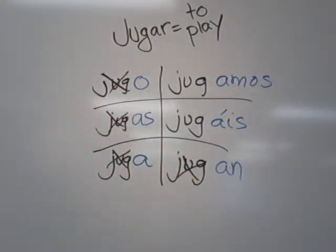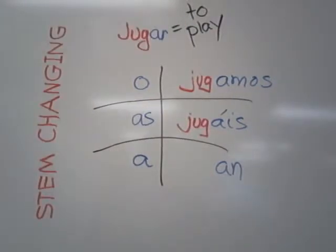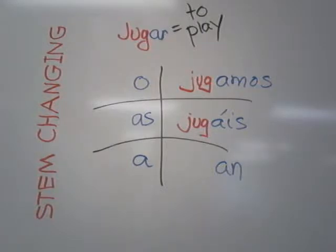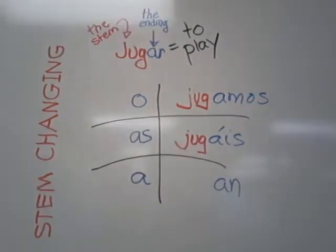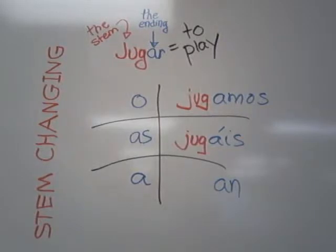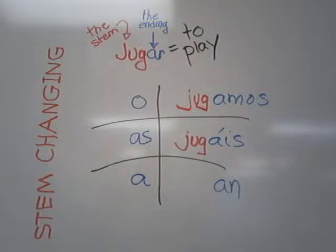Because jugar is a stem-changing verb. A stem-changing verb means that the stem itself changes inside the boot. The ending of the verb is the blue part, the AR, which changes to o, as, a, amos, ais, an in the verb.